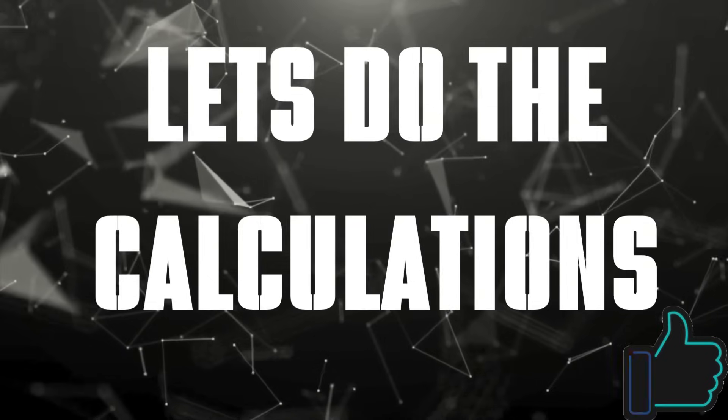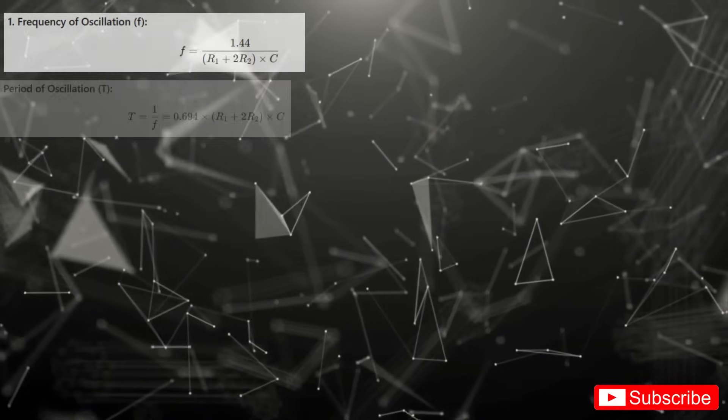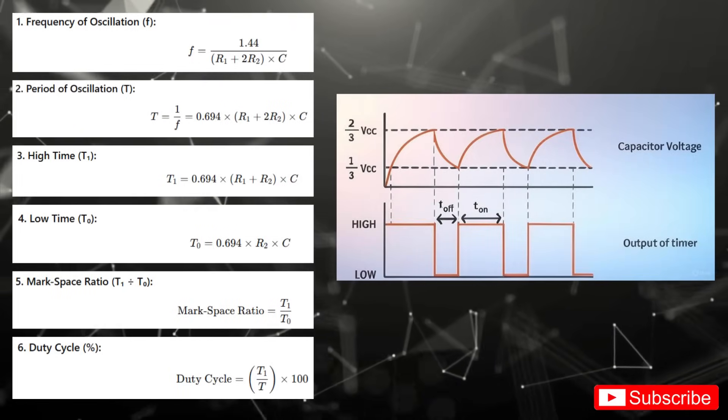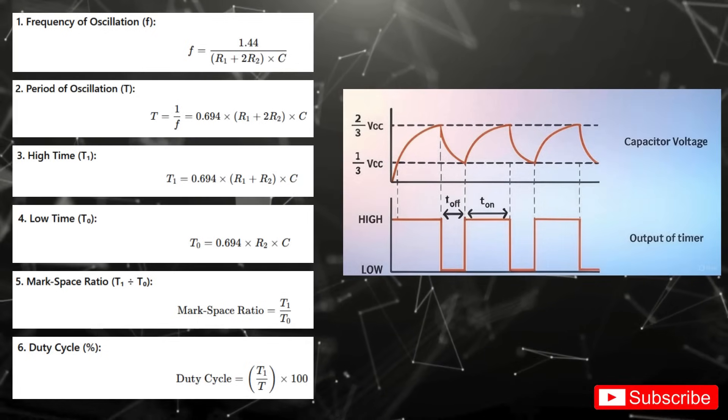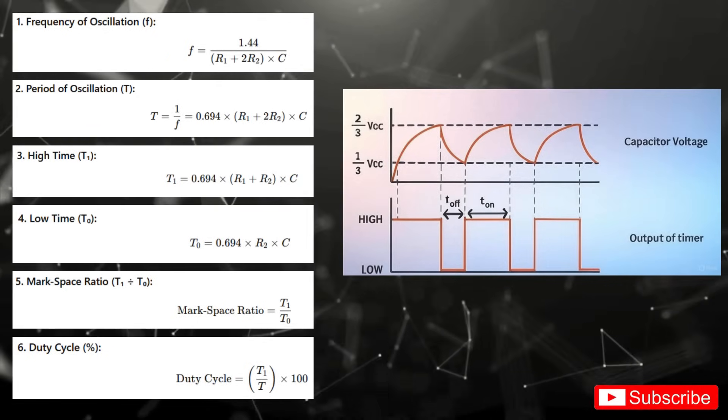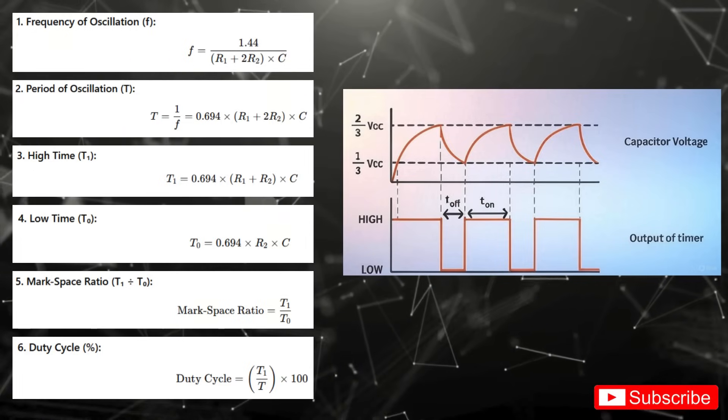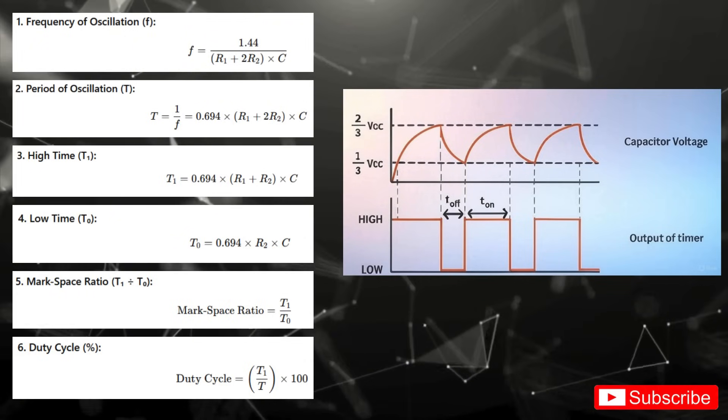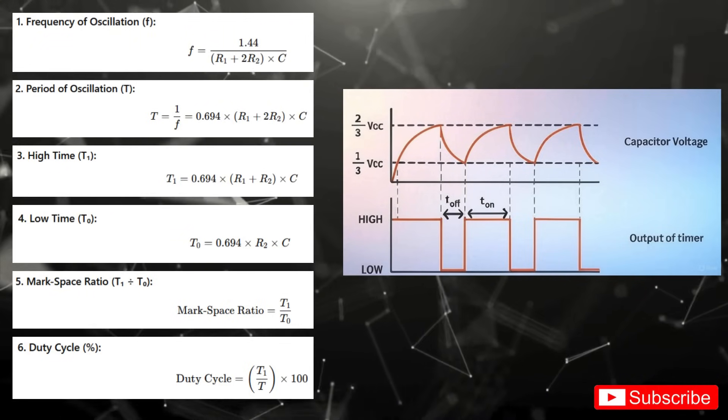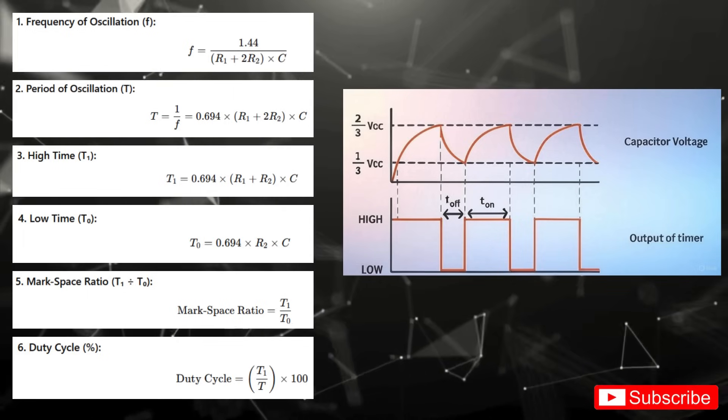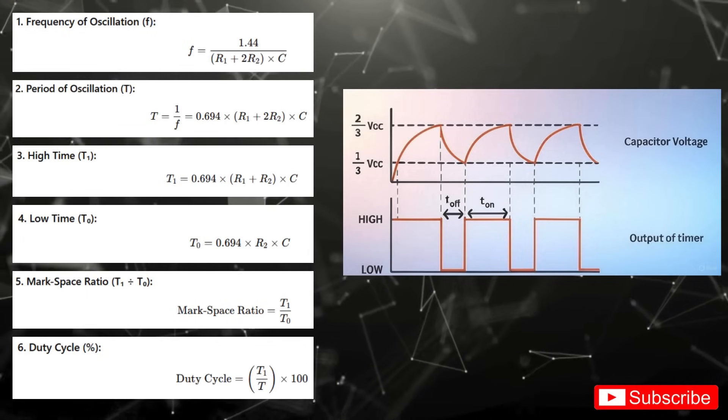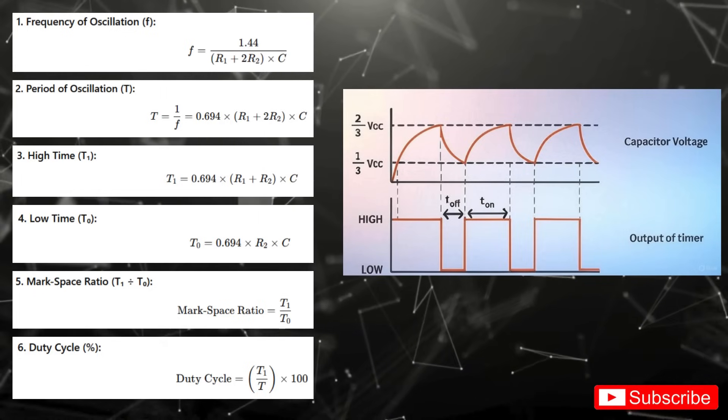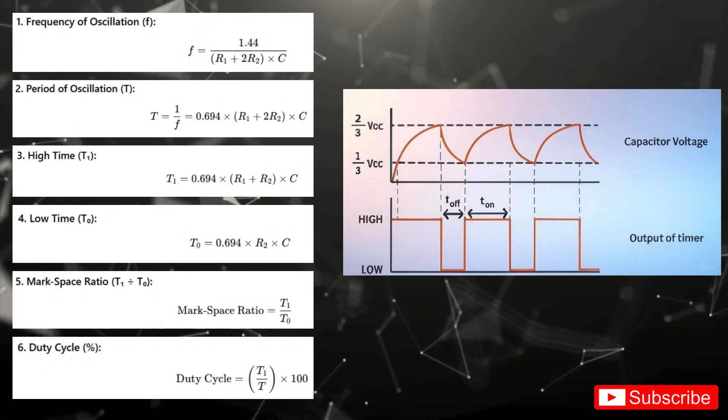Let's break down how timing works in a classic astable circuit. An astable setup continuously switches between high and low states. The number of pulses per second is the frequency given by F = 1.44 / [(R1 + 2R2) × C]. To understand how long each pulse lasts, we calculate the period. T = 1/F, which simplifies to T = 0.694 × (R1 + 2R2) × C. Now each cycle has two distinct parts. The high time, when it's on, T1 = 0.694 × (R1 + R2) × C. And the low time, when it's off, T0 = 0.694 × R2 × C. Put together, T1 plus T0 give you the full cycle duration.